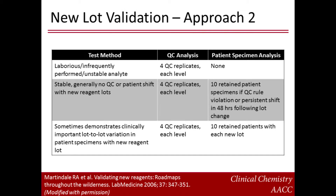Performing this process for all tests and all new reagent lots is very time-consuming and may also be cost-prohibitive for many laboratories. In 2006, Martindale and colleagues published a modified approach that relies on past experience with the test, along with the results of QC measurements, to decide whether patient comparisons should be performed prior to introducing a new reagent lot. Martindale and co-workers divide tests into three groups. The first group includes tests that measure very unstable analytes, use highly unstable reagents, are very laborious or time-consuming, or leave little or no specimen after initial analysis.